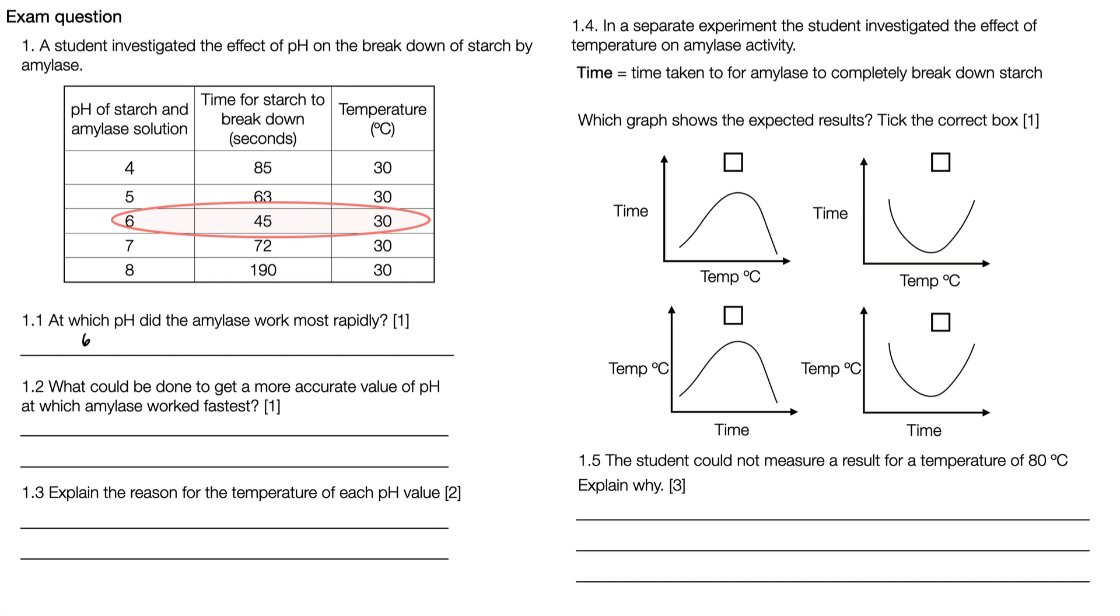1.2: what could be done to get a more accurate value of pH at which amylase worked fastest? Well we could repeat the experiment at smaller intervals of pH, or we could say repeat the experiment with pH 5.5 and 6.5.